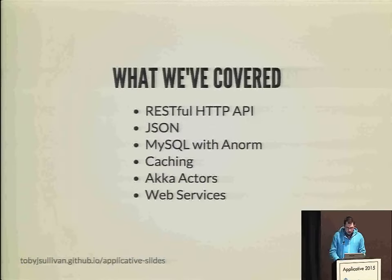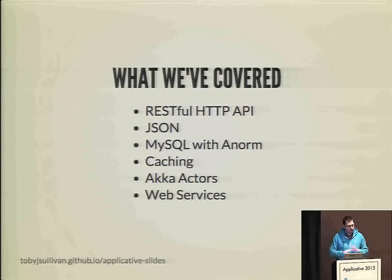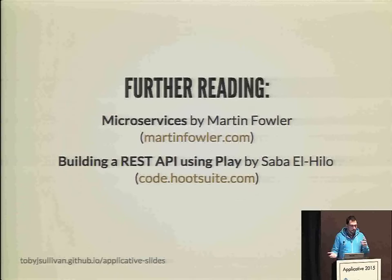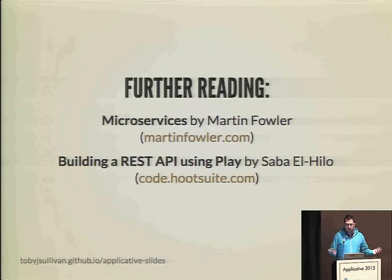Bringing that all together: we covered building a quick HTTP REST API, handling JSON both consuming from that web service and producing it for our output, persisting data to MySQL leveraging the Anorm library, caching in just a couple of lines, and a really brief introduction to actors - if you're not familiar with actor models, look into it, it'll change your life. And we consumed some web services pretty easily. If you found this interesting and want to read more about it, Martin Fowler has a great blog post on microservices. There's also a link at the bottom of these slides on the internet - works on your phone, you can click on any of these links. A former coworker of mine, Seba Elhilo, wrote a blog post on our code blog that covered building a REST API microservice with Play pretty well. That's it for me. Thank you.